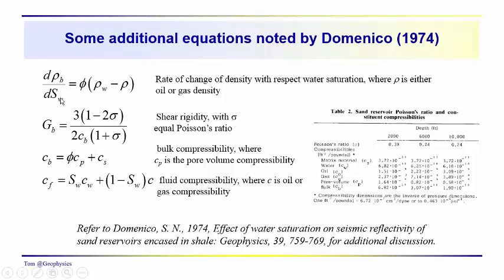We've got the derivative of the density with respect to the water saturation, and that's shown here. We have the shear rigidity, which is a function of the bulk compressibility, but primarily a function of the Poisson's ratio. And here we have the bulk compressibility, which is a function of obviously porosity, the pore volume compressibility, and the matrix compressibility, the sandy matrix. And then we have the fluid compressibility, which would be a function of both the water compressibility and the gas or oil compressibility. And then again, over here, we've listed some of the constants, some of the constant values that are used by Domenico in his calculations.